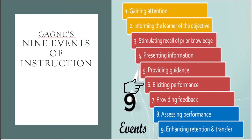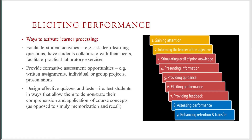The next event is eliciting performance — have students apply what they have learned through practice to reinforce new skills and knowledge and confirm correct understanding of course concepts. Ways to activate learner processing include: facilitate student activities like deep learning questions, peer collaboration, and practical laboratory exercises; provide formative assessment opportunities like written assignments, individual or group projects, and presentations; and design effective quizzes and tests that allow students to demonstrate comprehension and application, as opposed to simply memorization and recall.